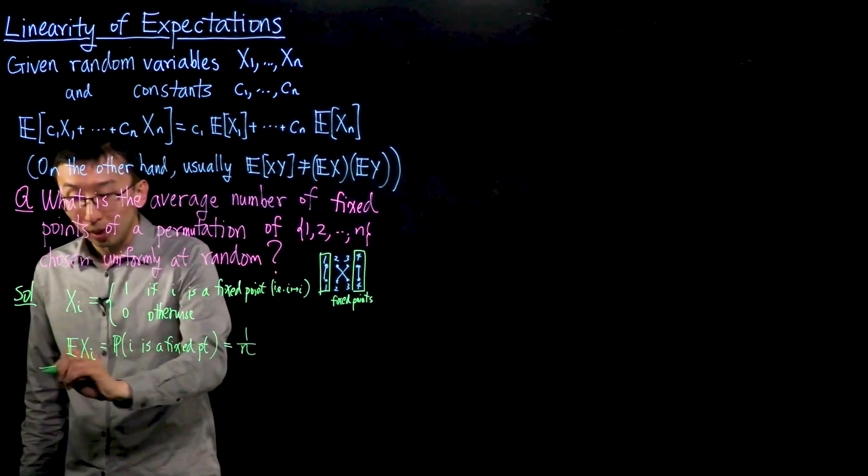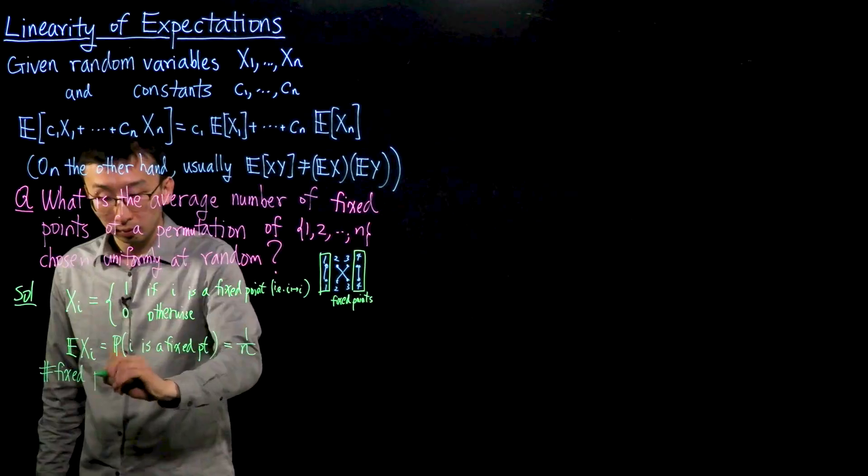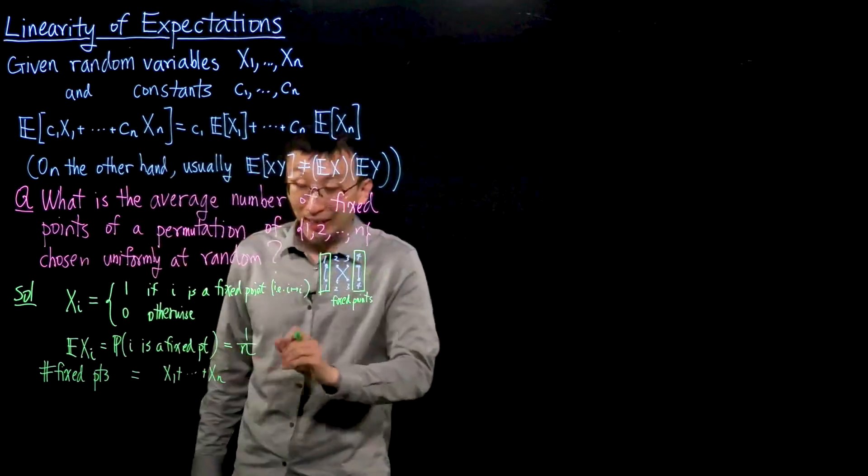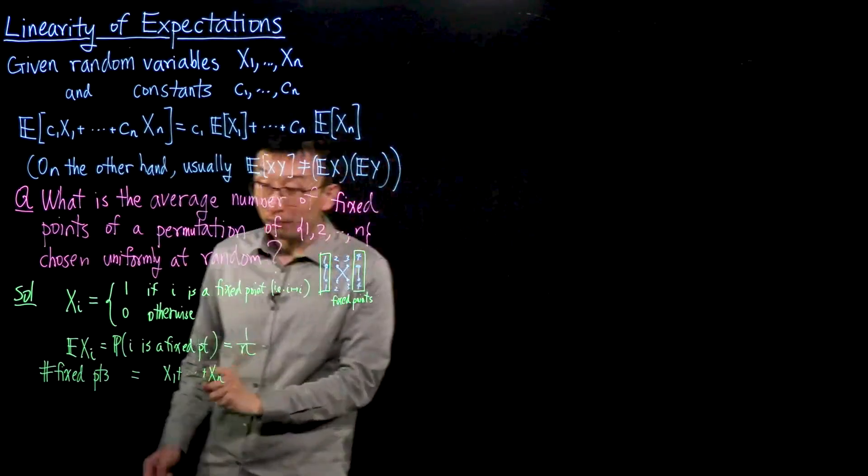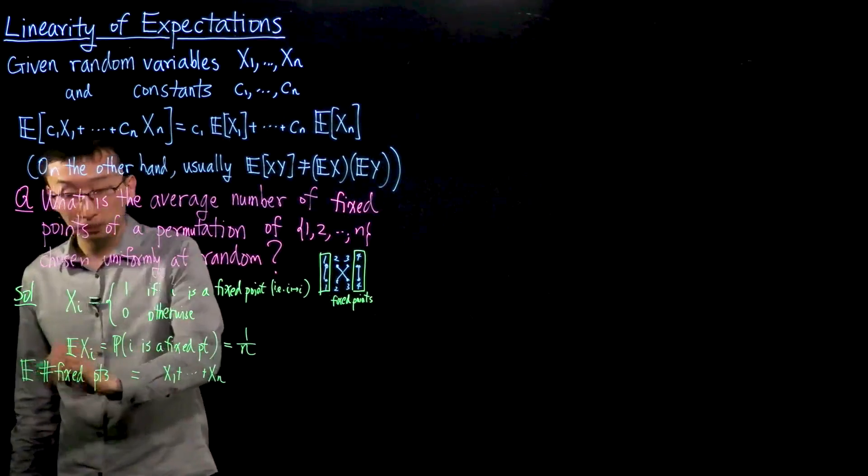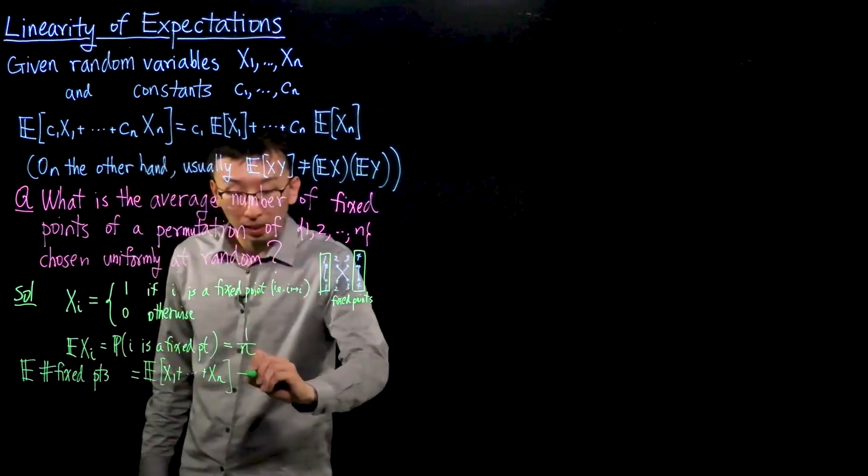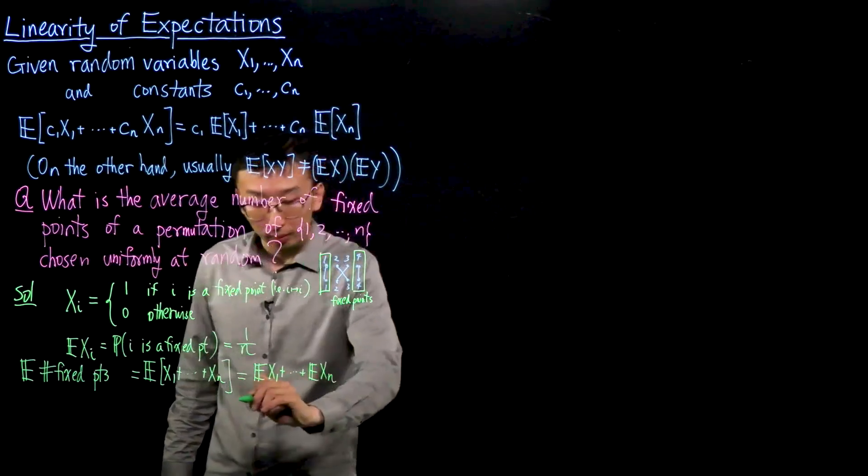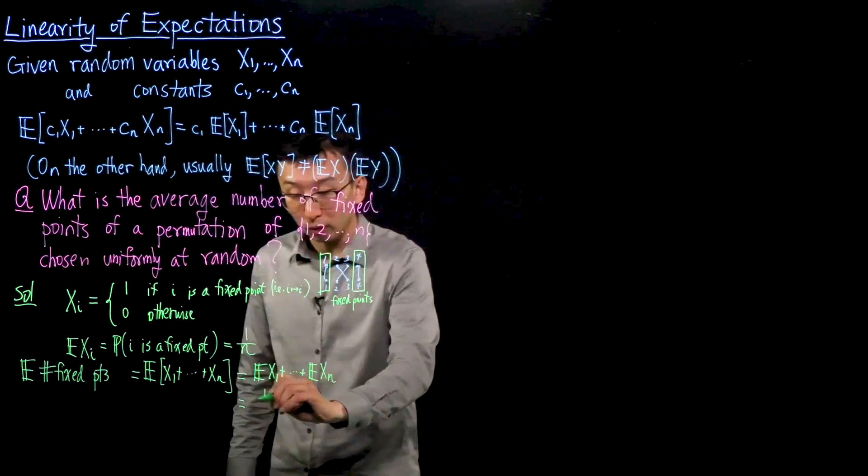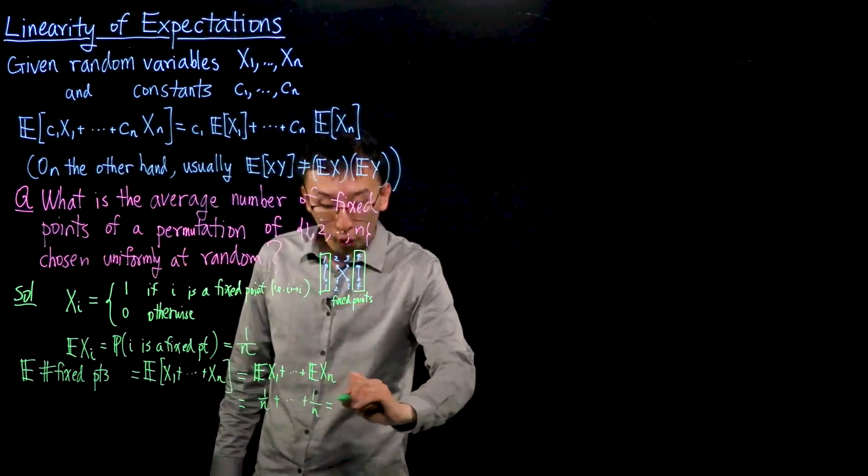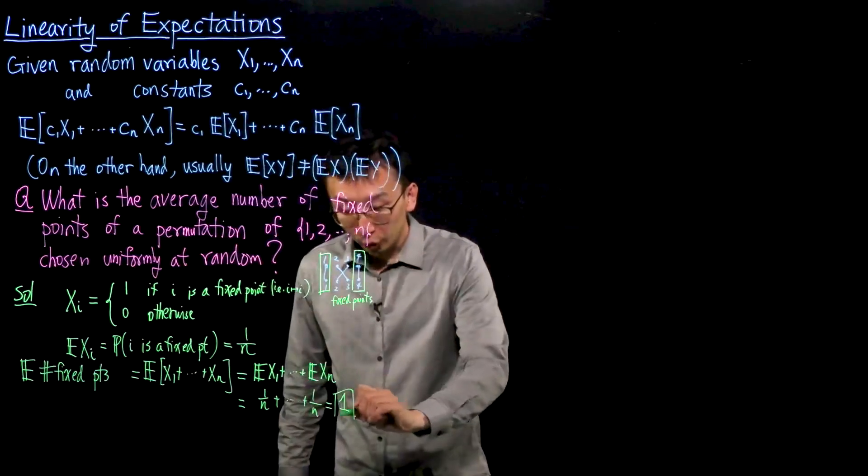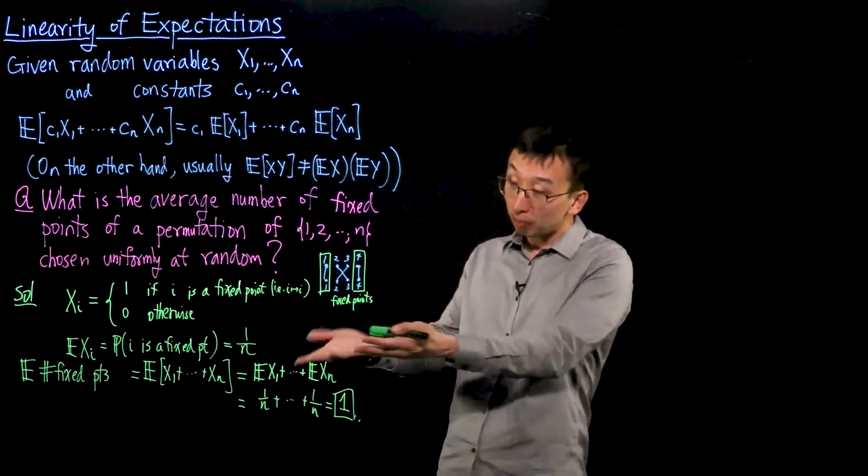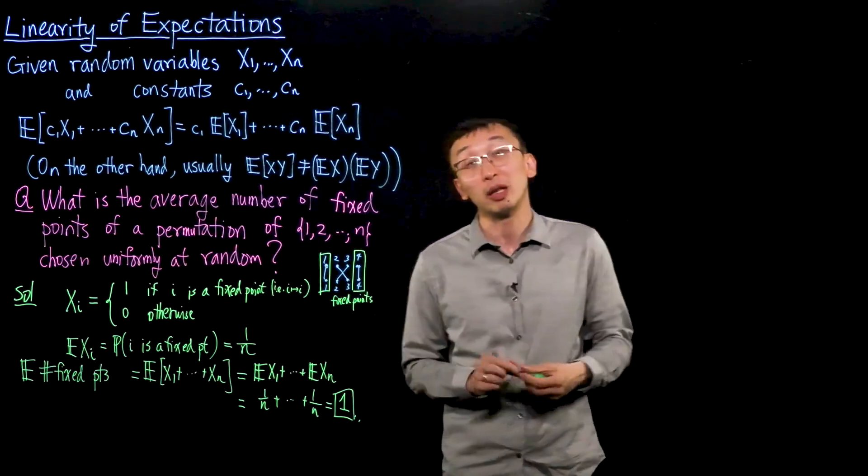And then the number of fixed points equals the sum of the xi, so x1 + x2 + ... + xn. And now we can take expectation of both sides and apply linearity of expectations. And see that each individual term is 1 over n. And there are n such terms, so the answer is 1. So the average number of fixed points of a permutation chosen uniformly at random is exactly 1. And you see there's a very quick calculation once you get the hang of the idea of linearity of expectations.